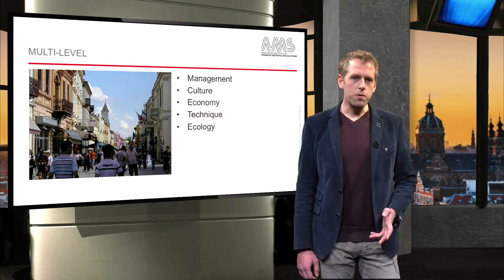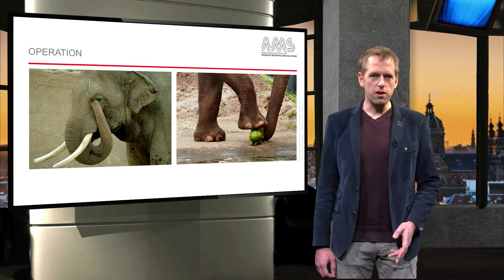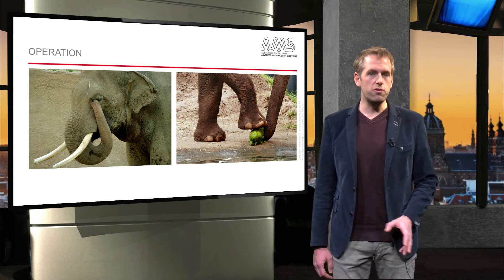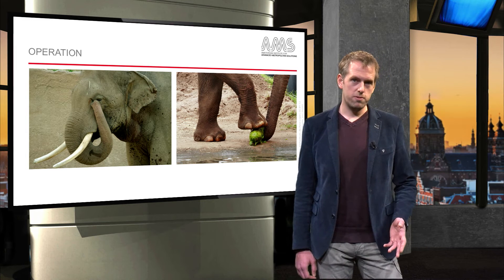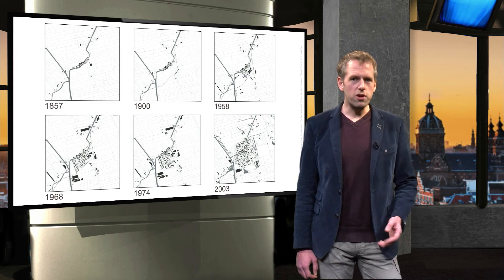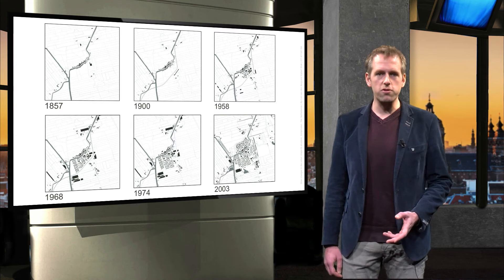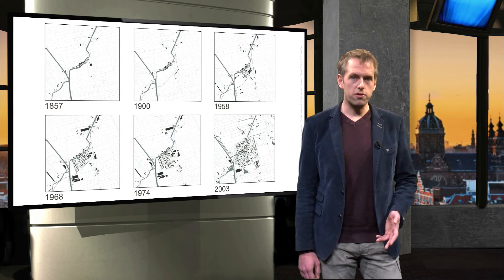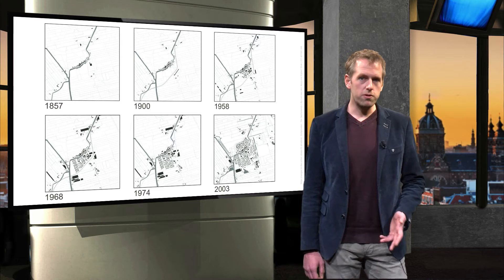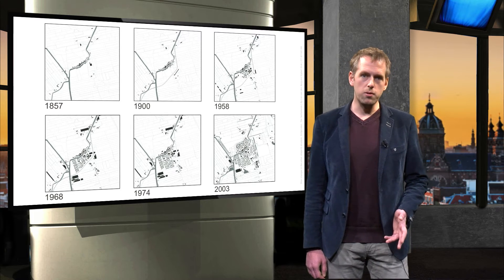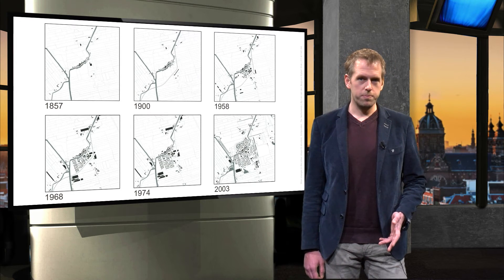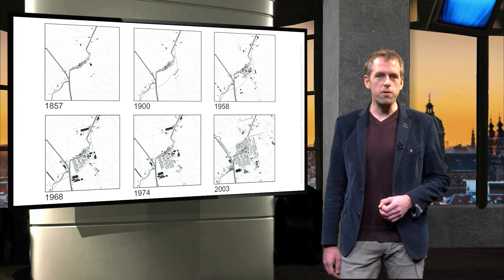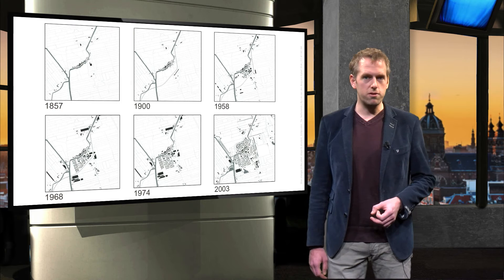When you look at how a city operates, you can see that it is at the same time subject to both relatively slow and fast changes. Slow changes refer to the growth and shrinkage of a city, caused by extensions, new infrastructures, urban transformations and planned and unplanned developments. Here you can see the transformation over time of Schipluiden, a small village in the Netherlands.